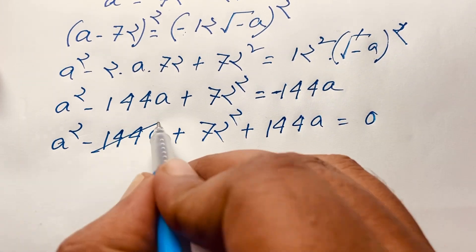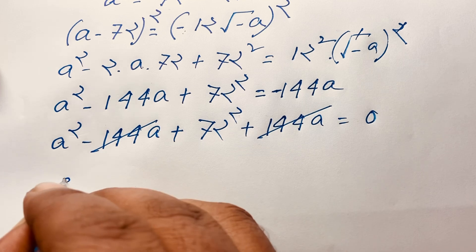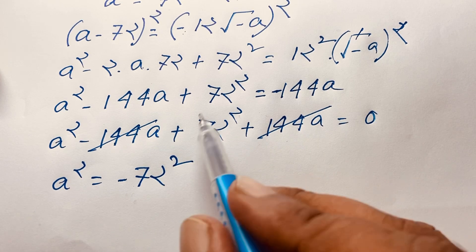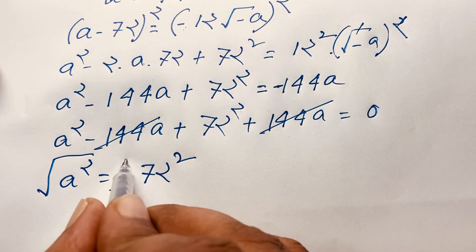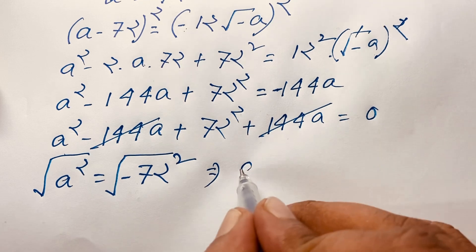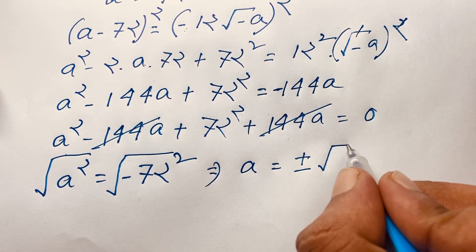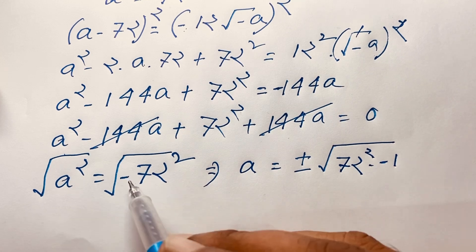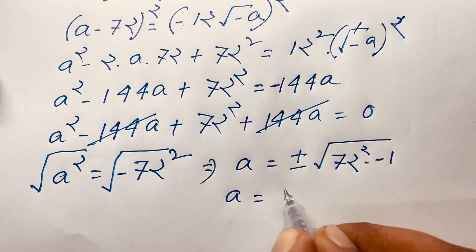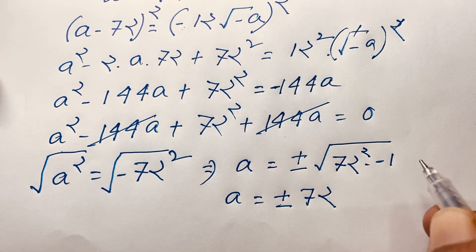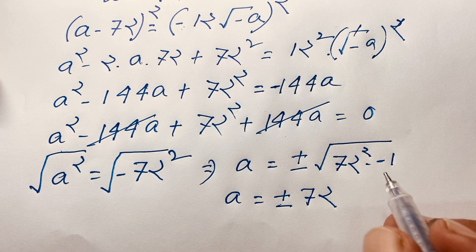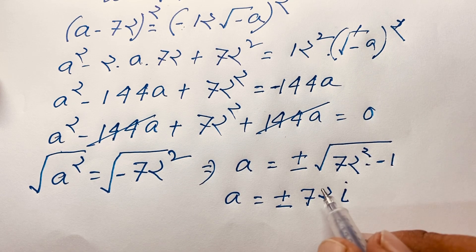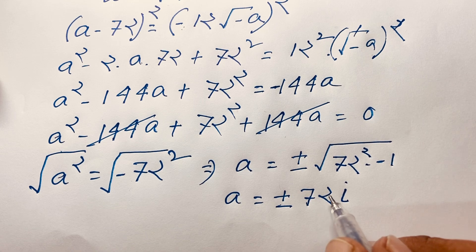You can see that the negative 144A and positive 144A cancel out. We find A squared equals negative 72 squared, because moving the positive 72 squared to the right side makes it negative. Now I take square roots of both sides: the square cancels and we find A equals plus or minus square root of negative 72 squared, which equals plus or minus 72 times square root negative 1. According to the complex number rule, square root of negative 1 equals i. So the value of A equals plus or minus 72i. This is the value of A in this math Olympiad question.